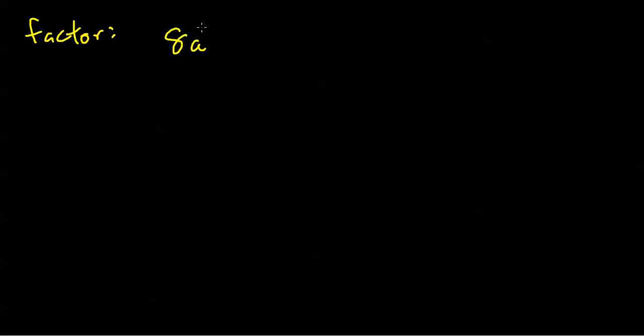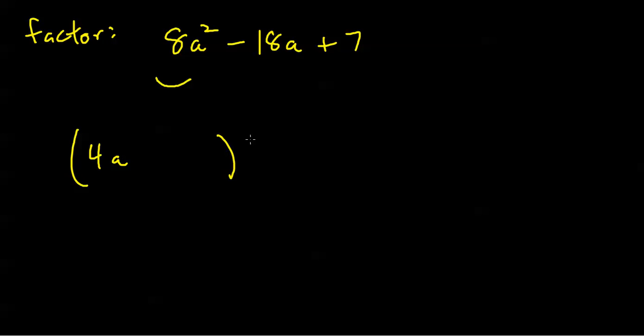Let's go up the ladder: factor 8a squared minus 18a plus 7. Things are a little harder here because the lead coefficient is not 1 and not prime. So I'm going to have two different possibilities for my first slots: either 8a and 1a, or 4a and 2a. I'll try 4a and 2a. My last product has to be positive 7, so if this sign is positive, the signs in between must be the same, and if this sign is negative, they both must be the same negative.